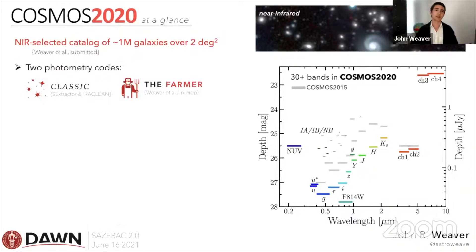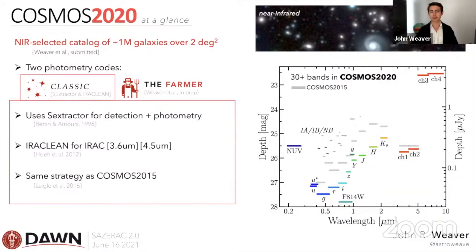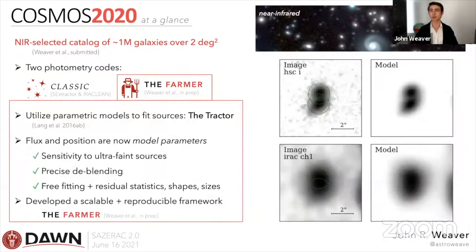The catalog is constructed with two photometric codes. The first is CLASSIC — essentially the same strategy as in our 2015 catalog — utilizing SourceExtractor for source detection and photometry and then IRAC-CLEAN, a PSF fitting software, for IRAC photometry. In contrast, we use a new tool called THE FARMER, which utilizes parametric models to fit sources, wrapped around THE TRACTOR — a software code written by Dustin Lang and David Hogg — where flux and position are full model parameters.